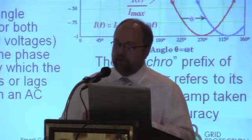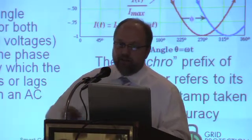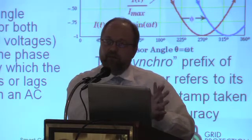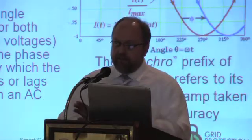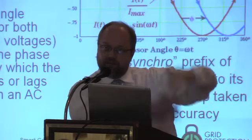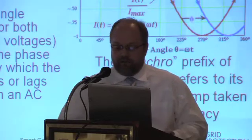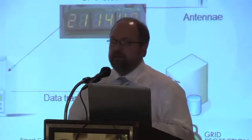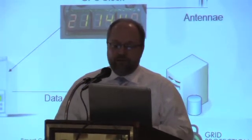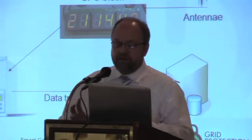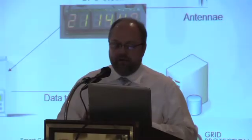The synchro part of the phasor comes from a timestamp that gets collected right when the item gets measured. The time synchronicity of the measurements is what makes this special, because there are network delays. If you're able to figure out exactly when everything was measured and line them up, you get an idea of what's going on on the grid. There are devices in the field today — and there are several DOE grants to install lots of them. They're called phasor measurement units. These devices measure phasors at a very high frequency and push the data back to control centers at about 30 samples a second.